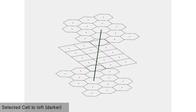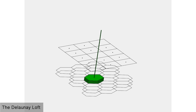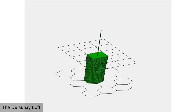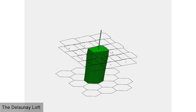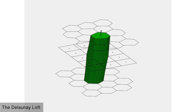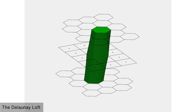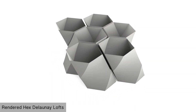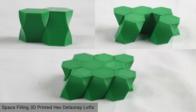We highlight and isolate a single cell's corresponding control curve to help visualize the loft. As the loft starts, notice the transition from the bottom layer shape — in this scenario a hexagon — to a quad. As the loft continues, notice the transition from the quad back to the top layer shape, in this case a hexagon. The resulting render and 3D print models are shown. Notice the tiling and packing features of the shapes.